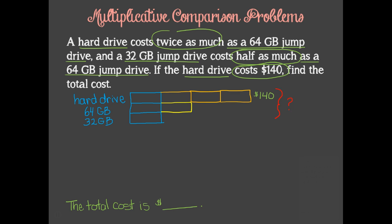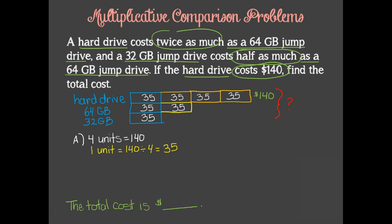Now we are ready to let our model drive the math. We can see that our first step should be to find out how much each of these equal sized units represents. Take a look at the hard drive unit bar. We can see that 4 units equals $140, so that means that one unit should be 140 divided by 4, which is 35. Let's go ahead and fill that in for each of the remaining units. Finally, we need to find the total, and there are 7 units total, so 7 times 35 equals 245. The total cost is $245.